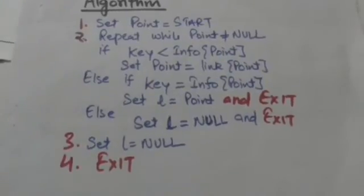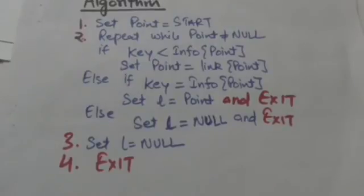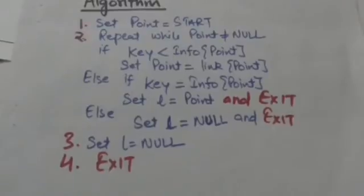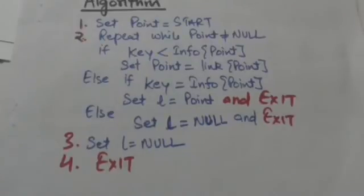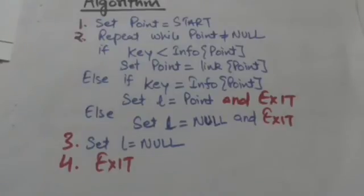In this step, value key is compared with the content of the node to which pointer variable point points. If value key is less than the content of the node, then the value of pointer variable point is updated, and pointer variable point now points to the next node of the linked list.